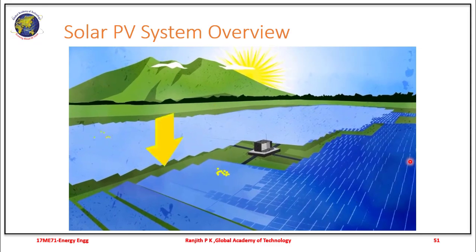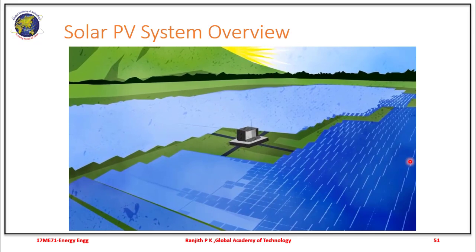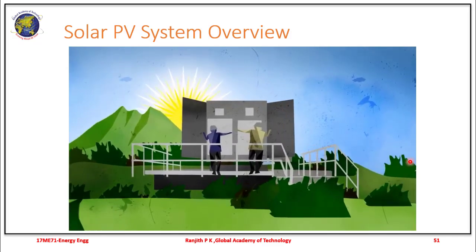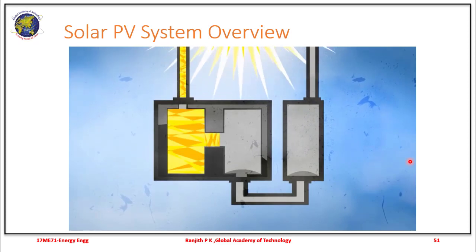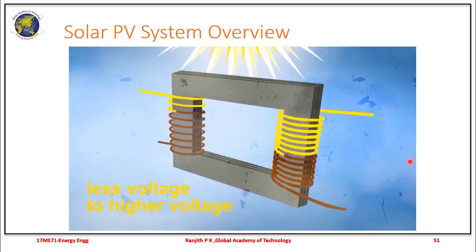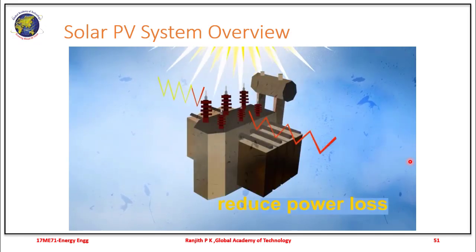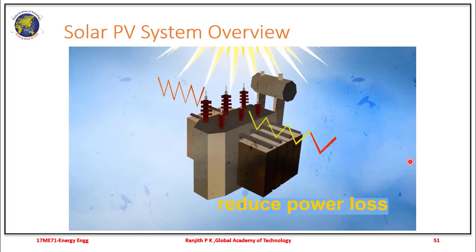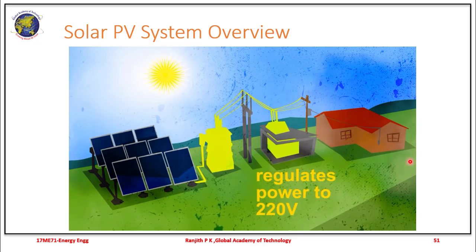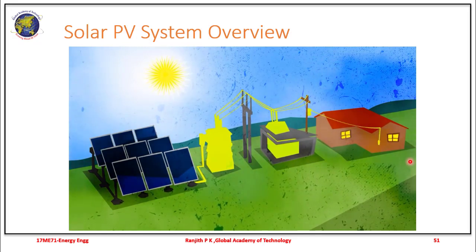This electricity is not yet ready for public use — it needs to be converted to match the type of electricity needed by home appliances. Solar power plants have inverters and transformers. The inverter converts the single current direction of DC electricity to multiple directions of alternating current or AC. The electricity then flows to a transformer and is boosted to 13,800 volts to reduce power loss when transmitted over long distances. From the transformer, electricity flows to a substation, which regulates electricity to usable 220 volts using another transformer and distributes power to homes.